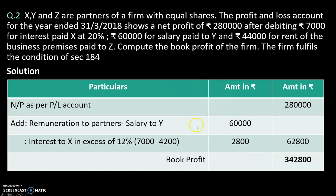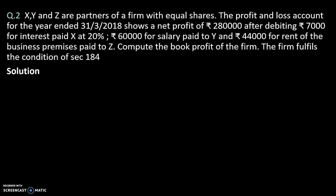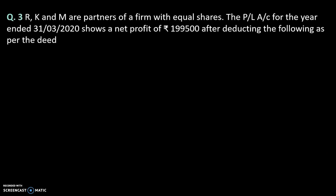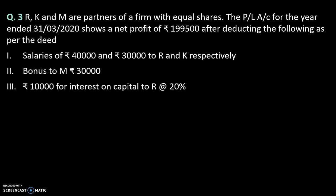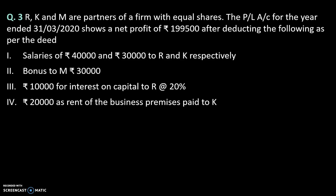The profit and loss account shows a net profit of Rs. 1,99,500 after deducting the following: salaries of Rs. 40,000 and Rs. 30,000 to R and M respectively, bonus to R of Rs. 30,000, Rs. 10,000 for interest on capital to R at 20 percent, and Rs. 20,000 as rent of the business premises paid to K.